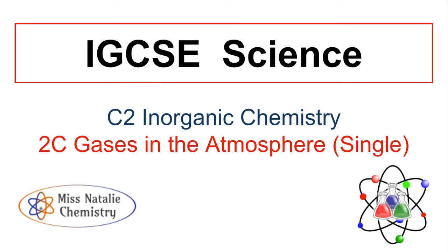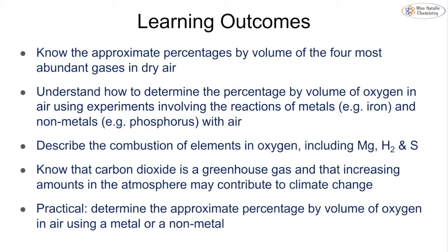In this video we're going to be looking at topic 2c, gases in the atmosphere. This is part of the IGCSE chemistry course from Edexcel, looking at the single science outcomes. For single science you're required to know the approximate percentages by volume of the four most abundant gases in dry air, how we can determine the volume of oxygen using different experiments, and that carbon dioxide is a greenhouse gas contributing to climate change.